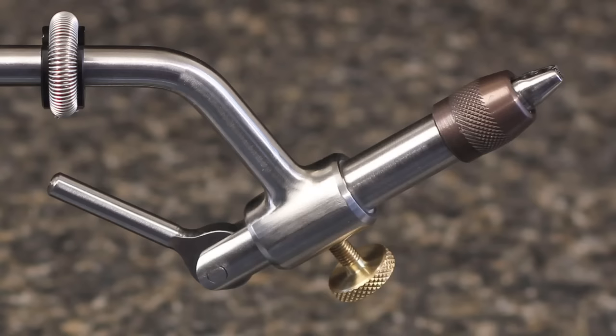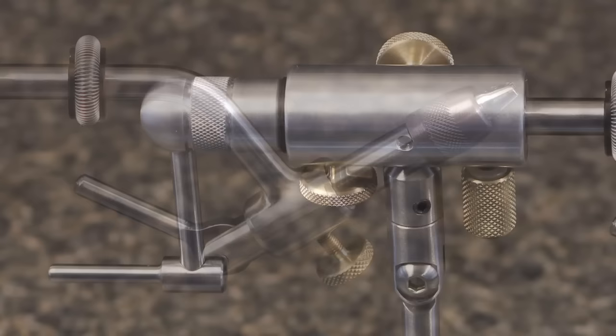Perhaps most importantly, it's capable of holding hooks from size 8-aught all the way down to a size 22, absolutely tight in its jaws.